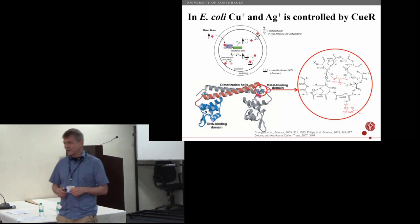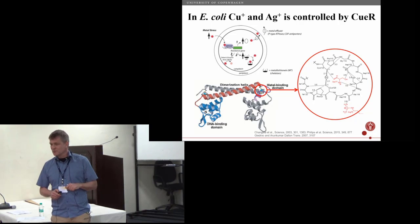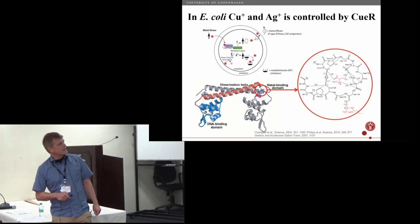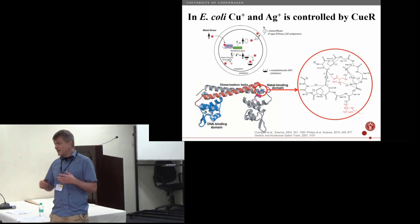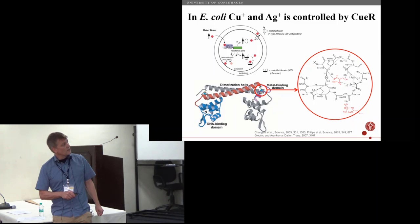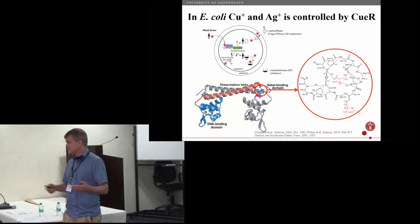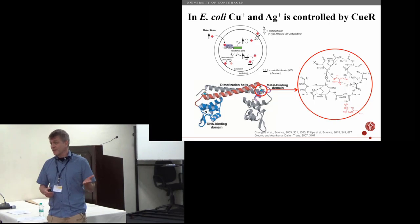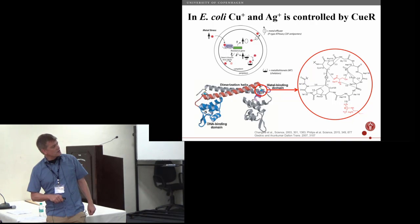But the bacteria have also developed resistance mechanisms against metal ions, not only the ones we come with but also their natural competitors can try to kill them by exposing them to metal ions. This is a simplified picture of a bacterium. Inside in the cytoplasm you can see if you add metal ions here, you have a sensor protein that will feel this metal ion coming in. The sensor protein sits on DNA and once the metal ion binds, it activates transcription of genes, proteins that code for the expression of a pump that pumps the metal ion out. So this is a resistance mechanism that the bacteria have evolved against the chemical warfare of external metal ions.